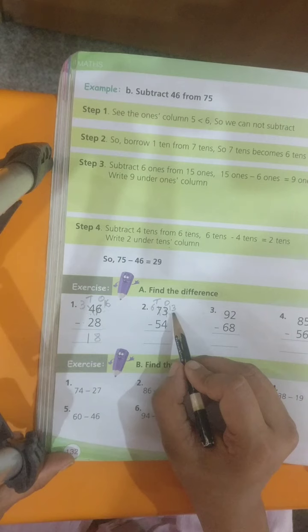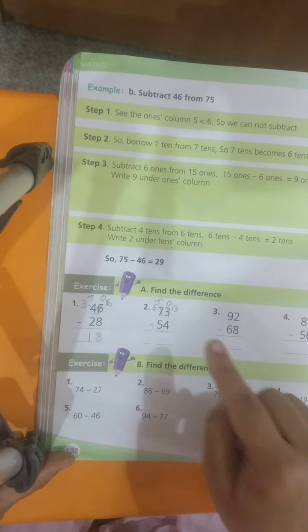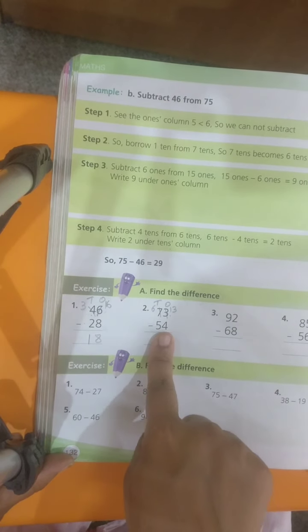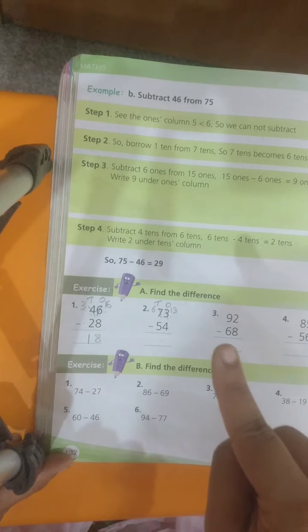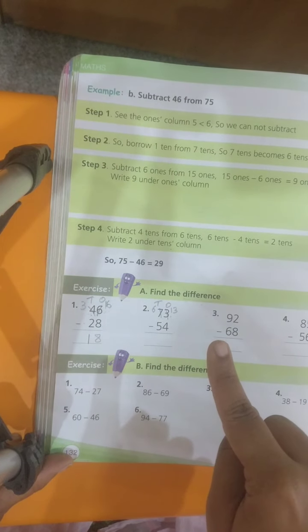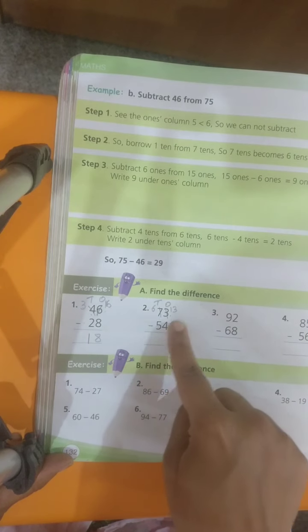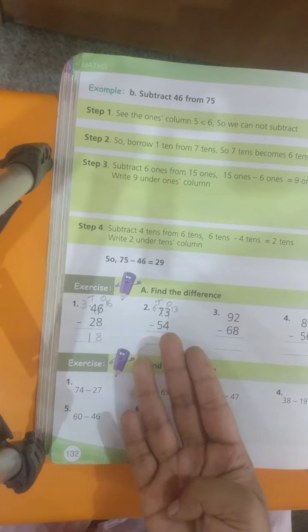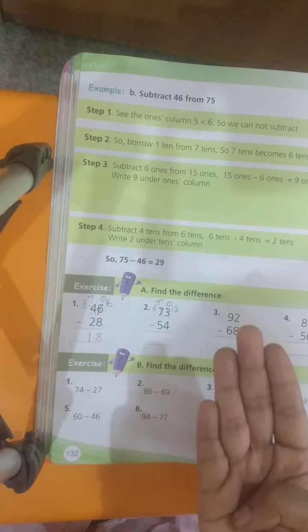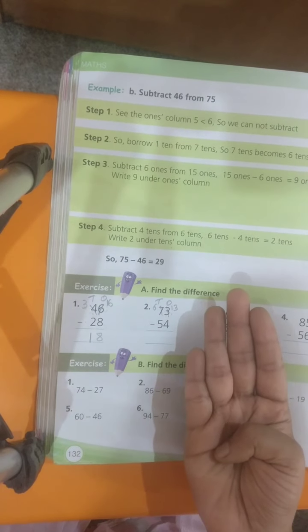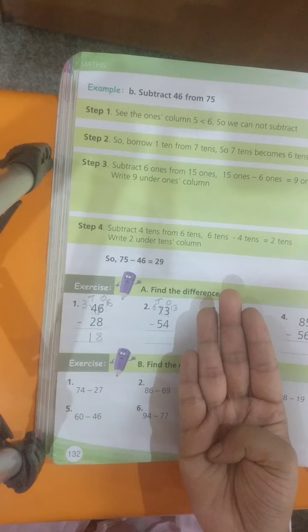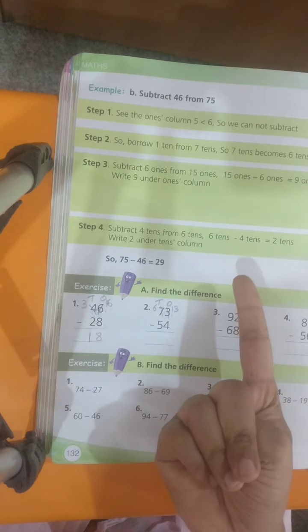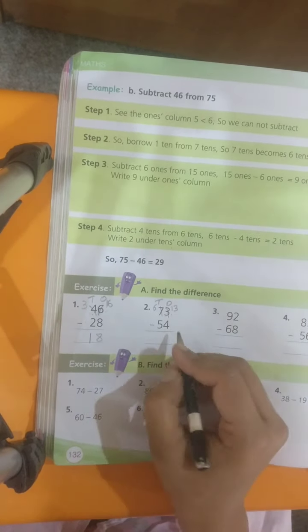Now, you can do subtraction. Anything you feel like. First one is 13 minus 4. How do you do? First method is better children. Keep 13 in your mind. 4 on your finger. Because till now you have been practicing this method only. 13 in your mind. Before 13, 12, 11, 10, 9. So, my answer is 9.